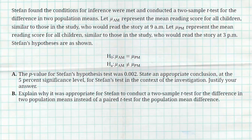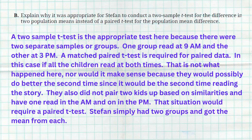Part B asks why it was appropriate for Stefan to use a two-sample t-test instead of a paired t-test. A two-sample t-test is appropriate here because there were two separate groups: one group of 50 kids read in the morning at 9 a.m. and another group read in the afternoon at 3 p.m. A matched paired t-test is required for paired data — for example, if all the children had read the story both times, you might consider a matched paired t-test.